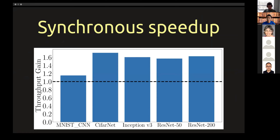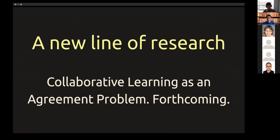In our work we have both new algorithms and new theorems, but perhaps the most interesting contribution is initiating this new line of research of genuinely distributed machine learning. In the months following our submission to POTC, we realized that for the more general case with non-IID data distributions on local workers, there is a neat reduction from genuinely distributed machine learning to a more classical agreement problem. That paper is now on archive.